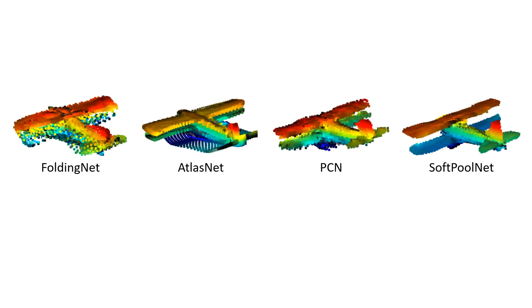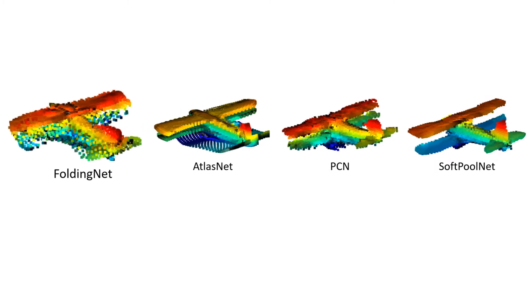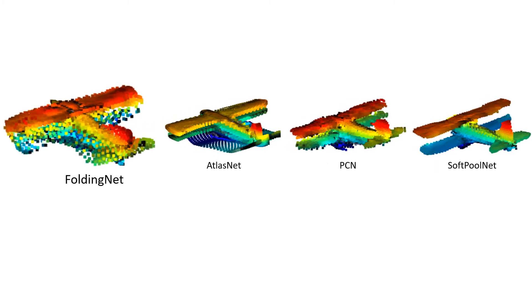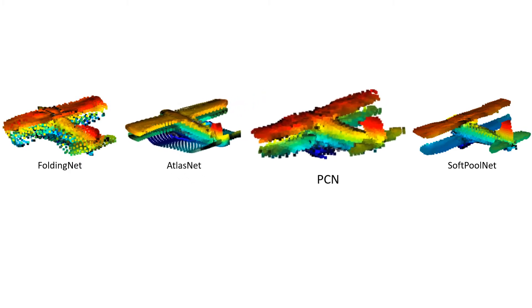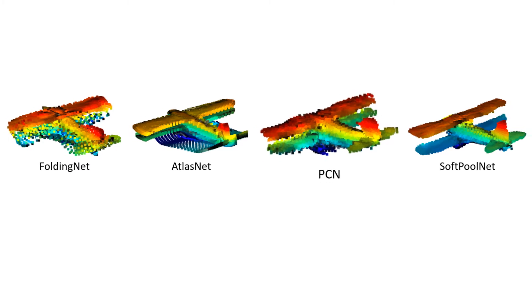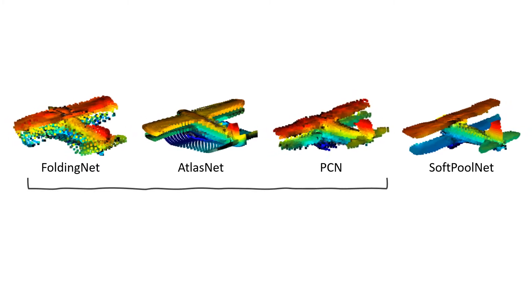There are several methods that aim to solve this problem. For example, FoldNet deforms a 2D grid from a global feature to form the desired shape. AtlasNet generates an object with a set of local patches to simulate mesh data. While recently, PCN proposes a coarse-to-find pipeline where FoldNet is applied locally. What is noticeable with these methods is the amount of noise in the reconstruction. This is attributed to the overlaps between different local patches.